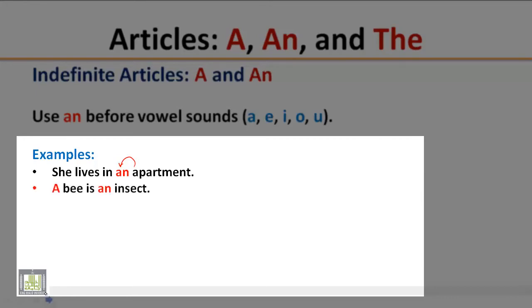A bee is an insect. The word bee starts with a consonant, so it is preceded by a. The word insect starts with a vowel sound, so it is preceded by an.